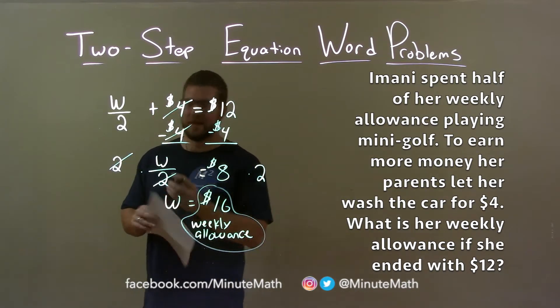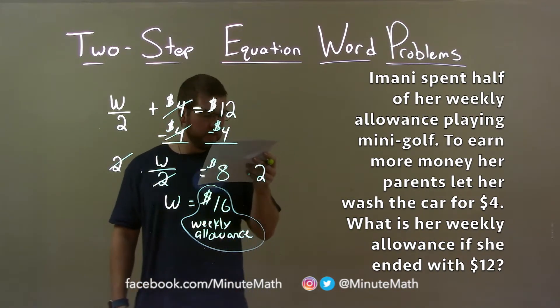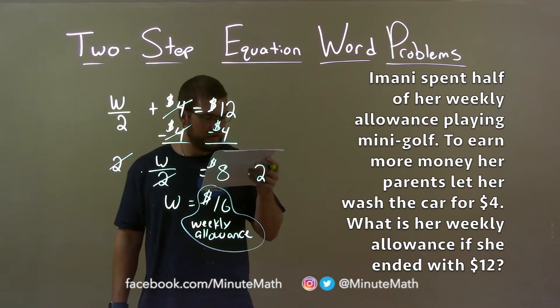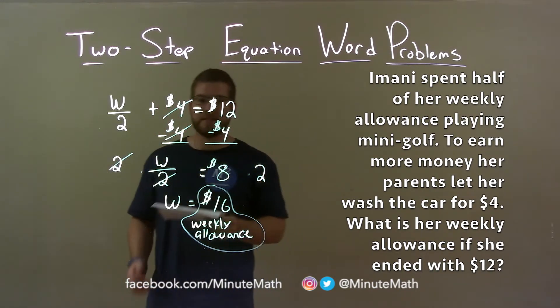So, quick recap. We're given the word problem: Imani spent half of her weekly allowance playing mini-golf. To earn more money, her parents let her wash the car for four dollars. What is her weekly allowance if she ended with twelve dollars?